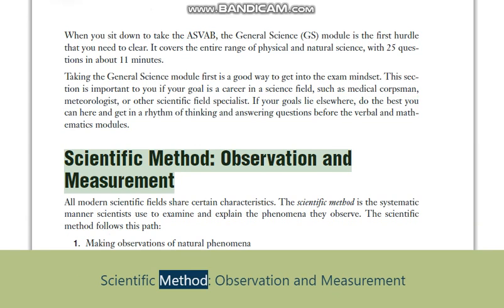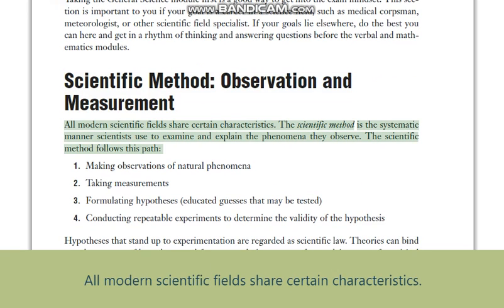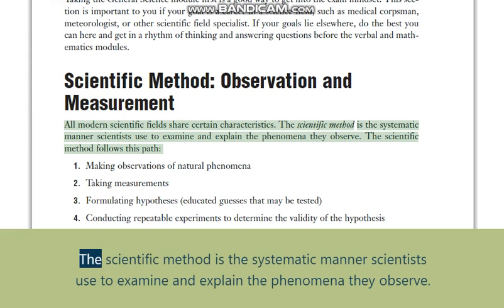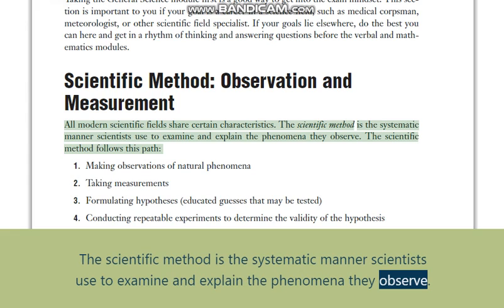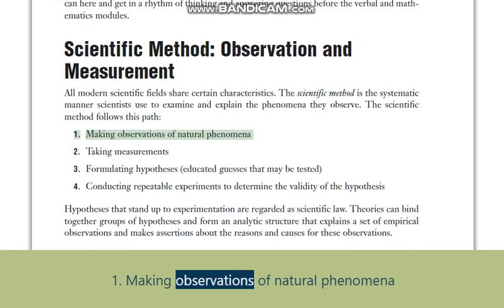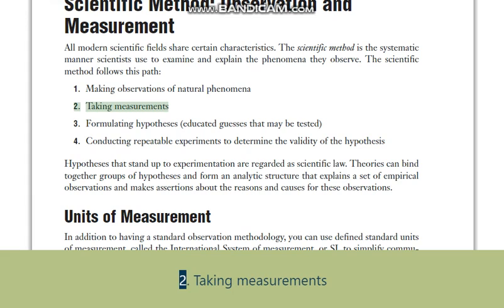Scientific method: observation and measurement. All modern scientific fields share certain characteristics. The scientific method is the systematic manner scientists use to examine and explain the phenomena they observe. The scientific method follows this path: 1. Making observations of natural phenomena.